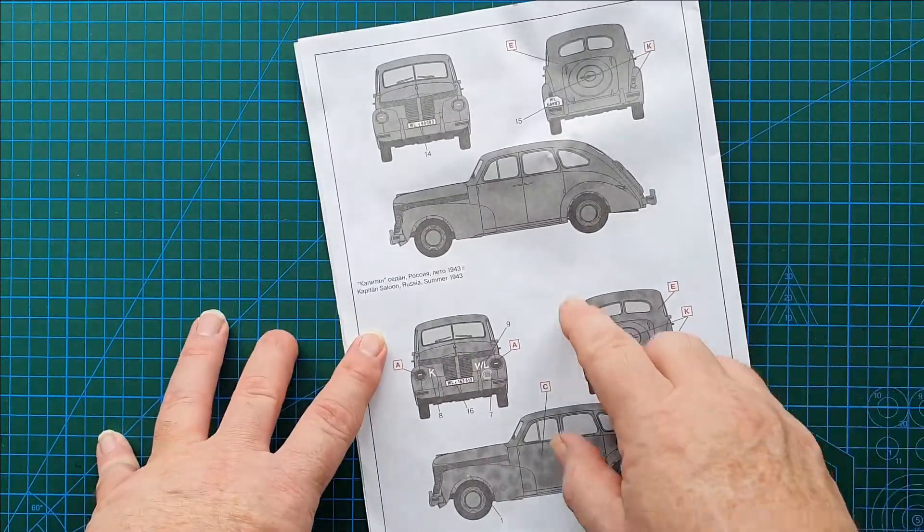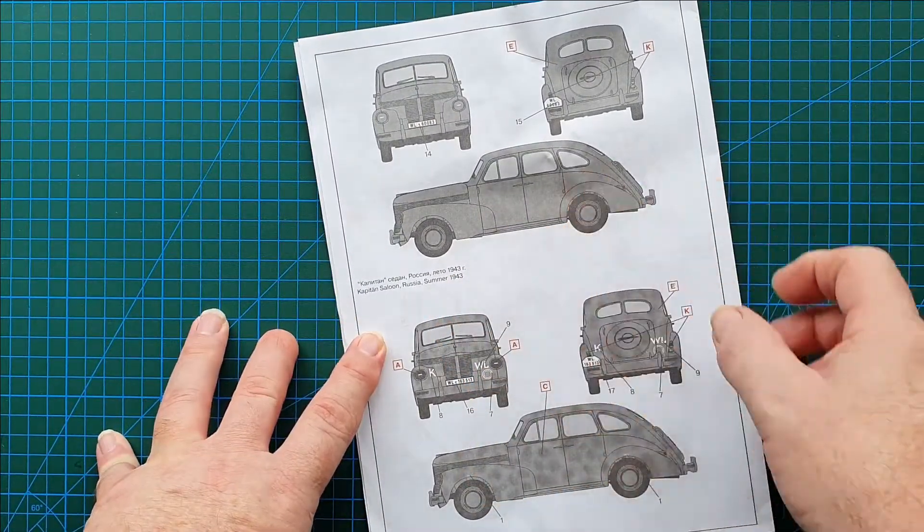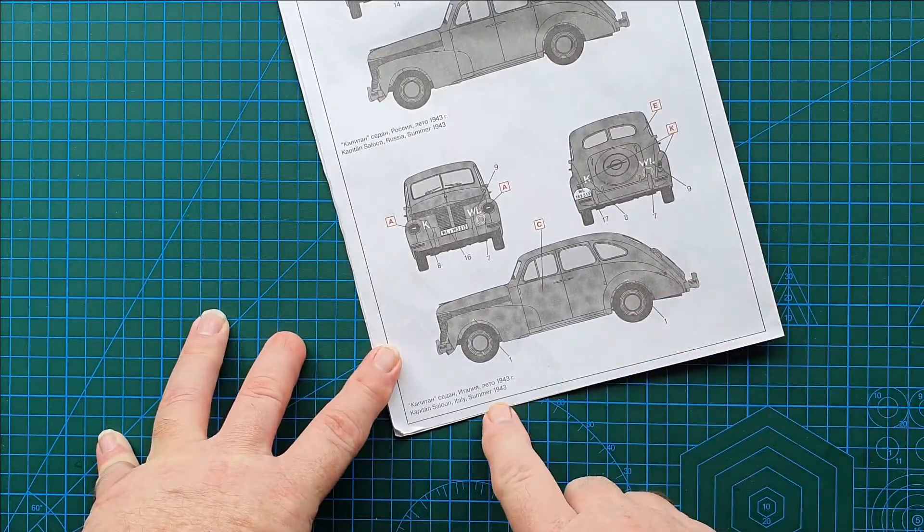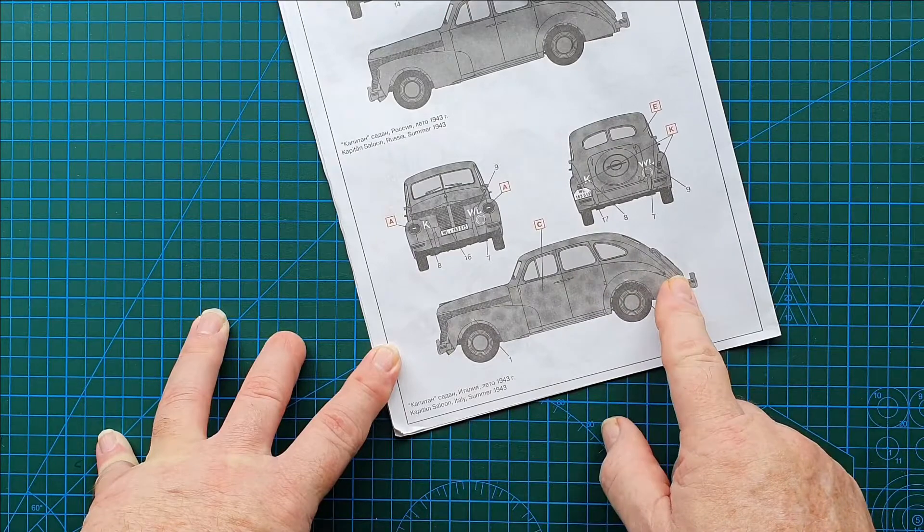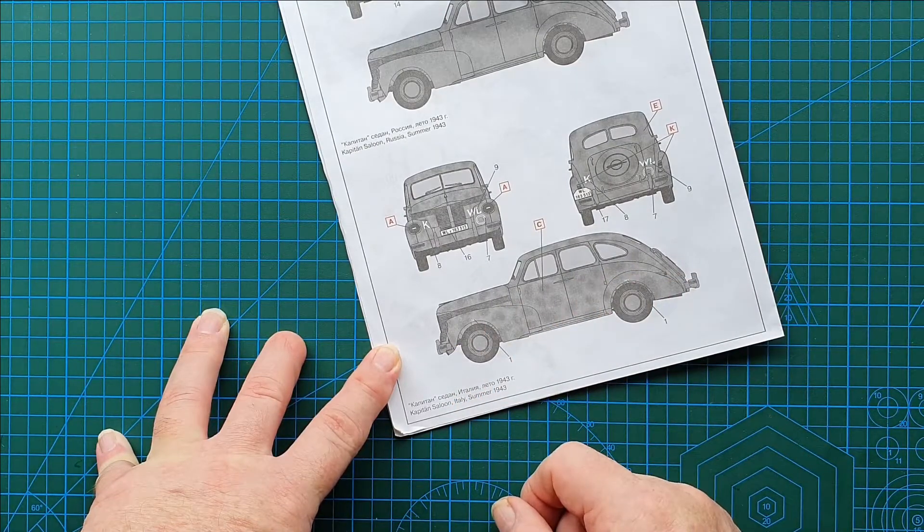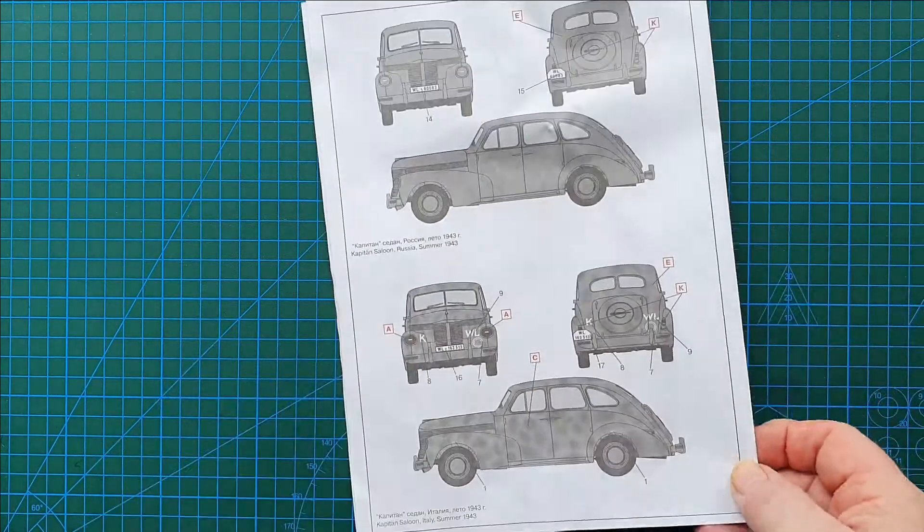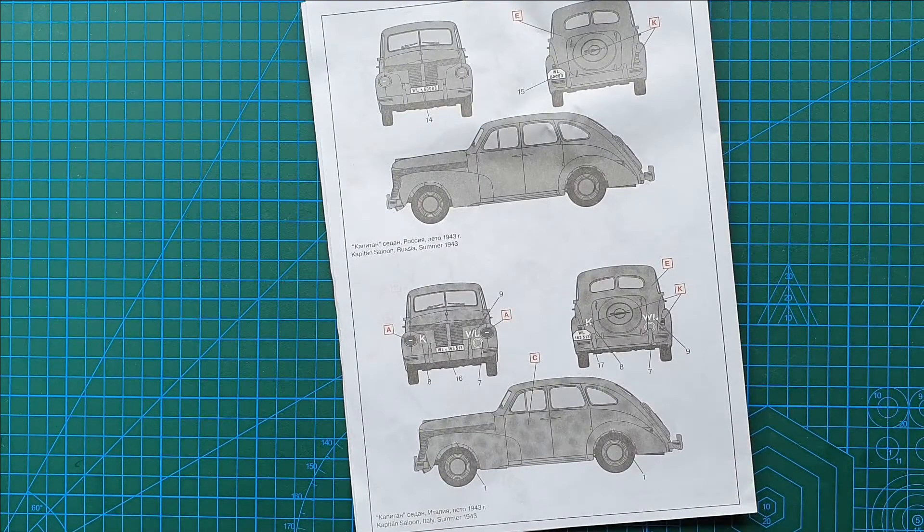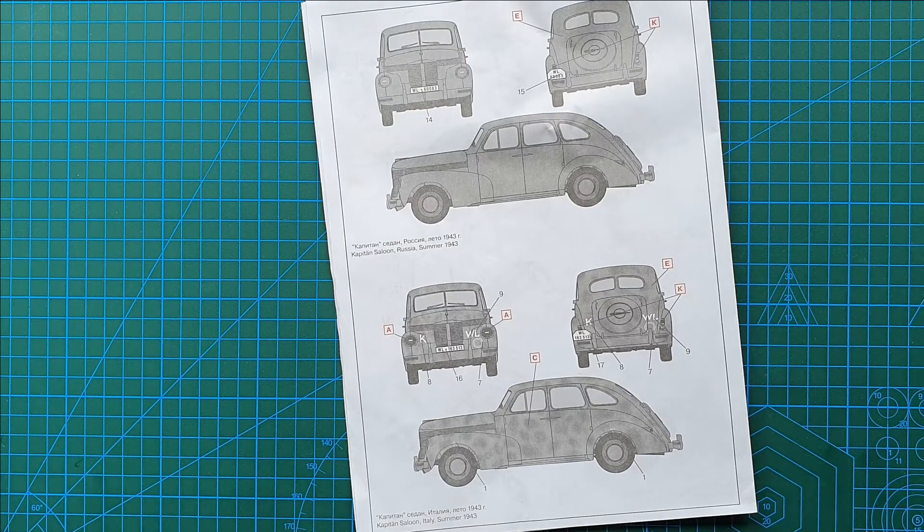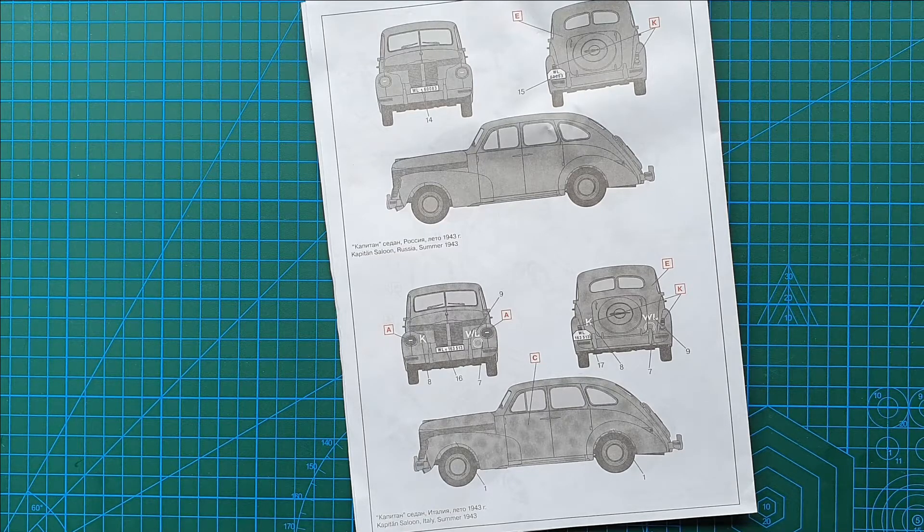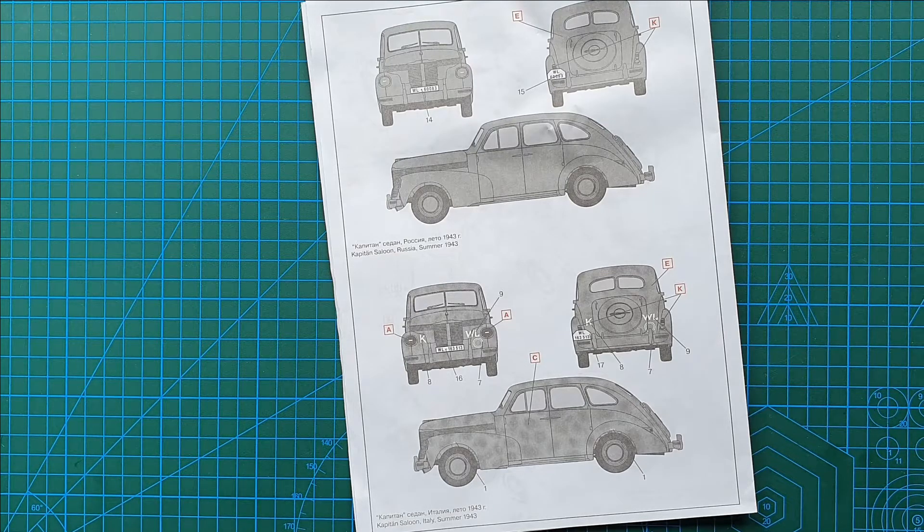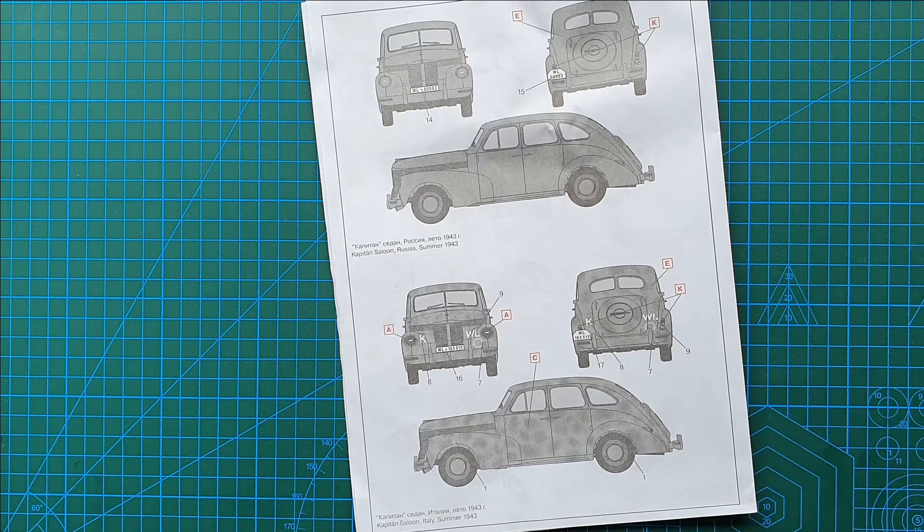Then you've got Russia summer 43 and Italy summer 43, which is your all over yellow with green spots on it. Literally, the camouflage scheme is entirely up to you. These vehicles were used in every theatre of war, so you could literally paint them almost any camouflage that your heart desires.